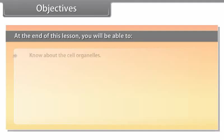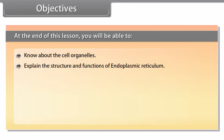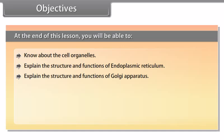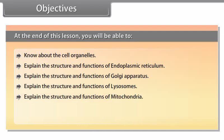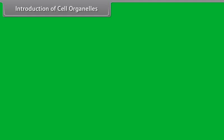At the end of this lesson, you will be able to: know about the cell organelles; explain the structure and functions of endoplasmic reticulum; explain the structure and functions of Golgi apparatus; explain the structure and functions of lysosomes; explain the structure and functions of mitochondria; explain the structure and functions of plastids; and explain the structure and functions of vacuoles.